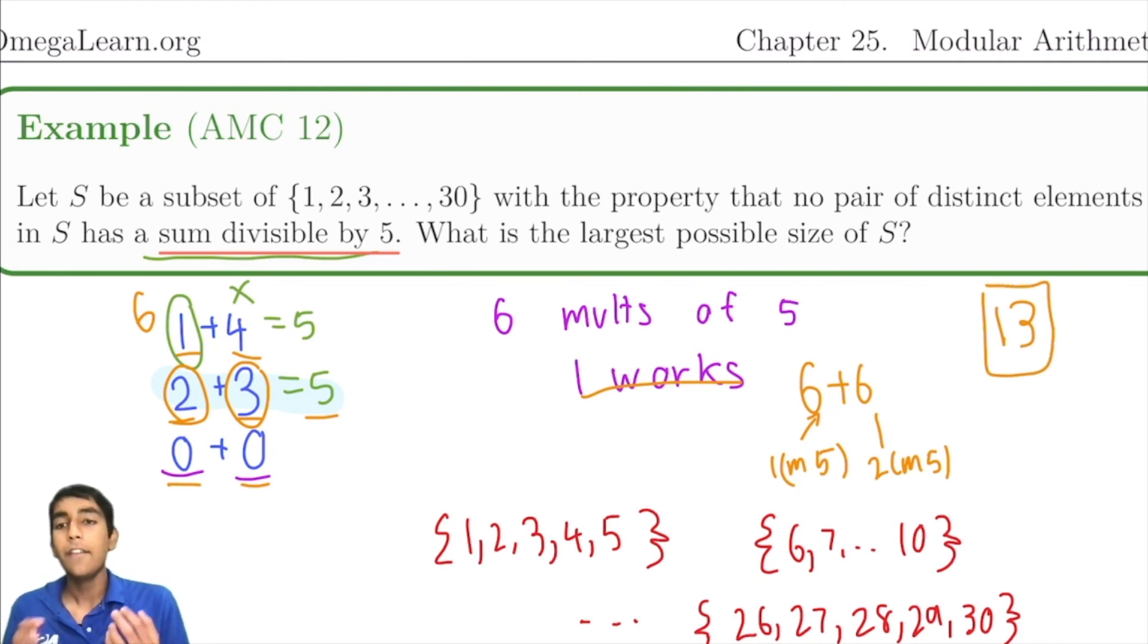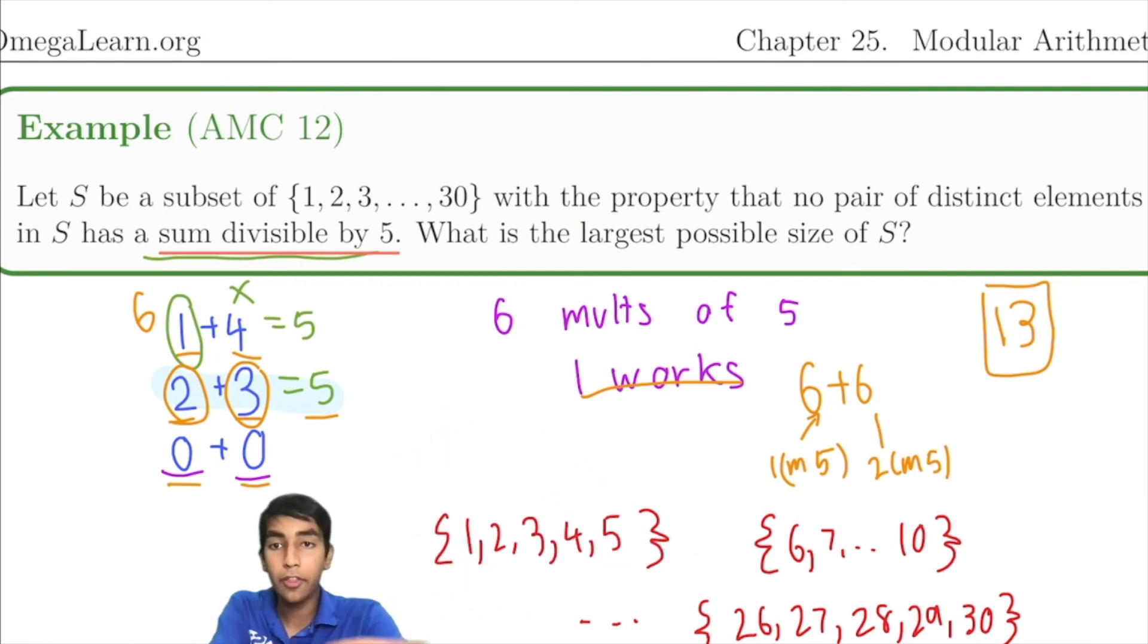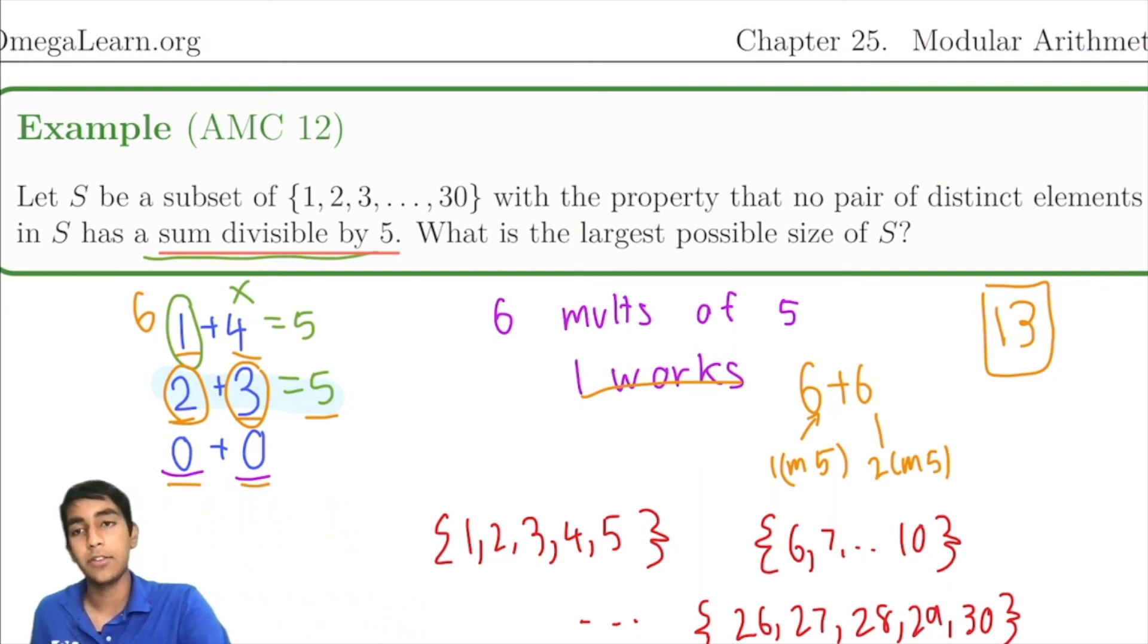Let's summarize. First, we took the cases where they have to add up to 0 mod 5. Then we saw that we could have 1 multiple of 5, but not 2 or more. And then we saw that the best possible case for us is to have 6 ones, 6 twos, or we could flip them as well. But they're symmetric, so it doesn't really matter. That's how we solve this problem.